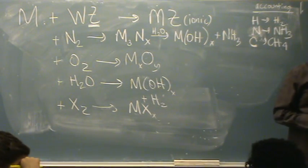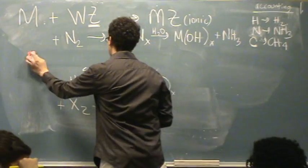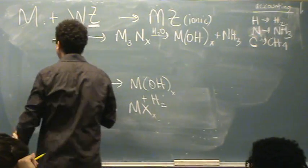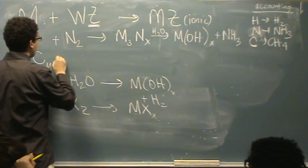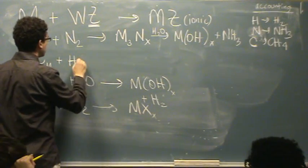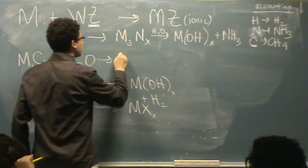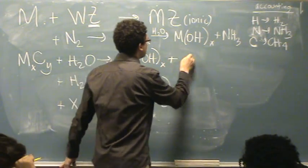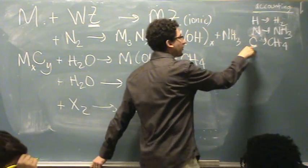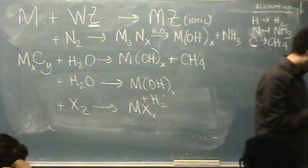And then one more reaction. It's a little different. You're starting with something with carbon in it. So it's MCxy plus water. Again, it goes to M(OH) plus, in this case, CH4, because you've got to count for the carbons. So you come off of CH4.